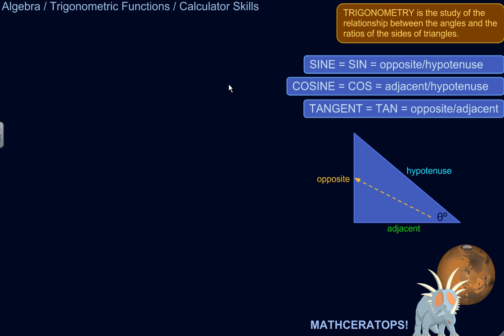So here are three trigonometric functions: sine, cosine, and tangent, and they're abbreviated SIN, COS, TAN. And for right triangles, these ratios are...